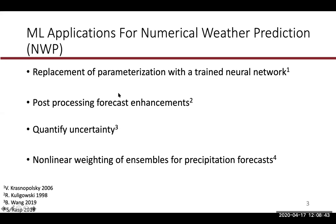Another important ML application is post-processing. Once numerical weather prediction models run and produce a forecast, there are inherent biases. Because of complex terrain and topography, models are unable to explicitly resolve mountains to the fullest extent. Being able to post-process and downscale these simulations using machine learning has been extensively used for almost the last two decades, and is used operationally as well.